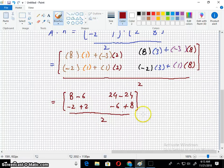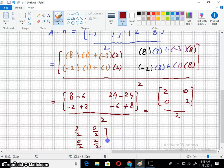So it becomes two, zero, zero, zero, and two, over two. Now I shall divide each element by two, like this.